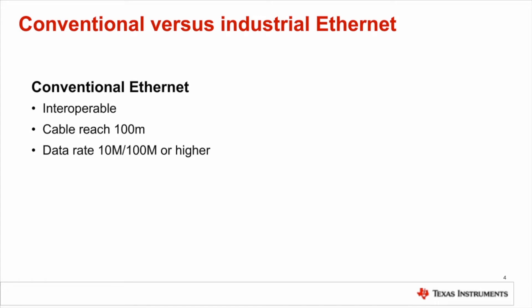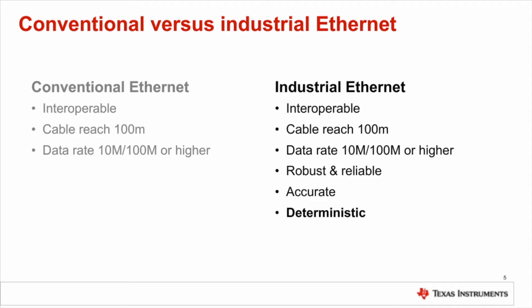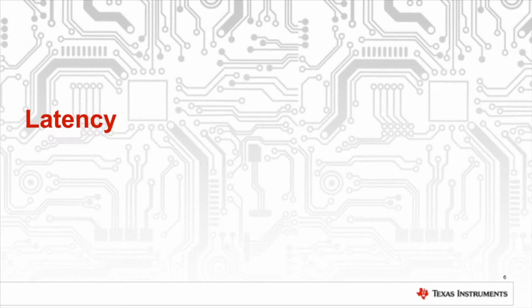So why didn't we just use Ethernet from the beginning? Conventional Ethernet is interoperable, can drive up to 100 meters, and the data rate goes up to 10 megabits per second, 100 megabits per second, or even higher. Industrial Ethernet has much greater requirements — it needs all of those, but in addition, it needs to survive very harsh environments. It also needs to be accurate; in traditional Ethernet, inaccuracy is a big inconvenience but not catastrophic, whereas in industrial Ethernet it can be. And probably most important of all, the system must be deterministic — traditional Ethernet was not deterministic, but with advances in today's technologies, it has become that way.